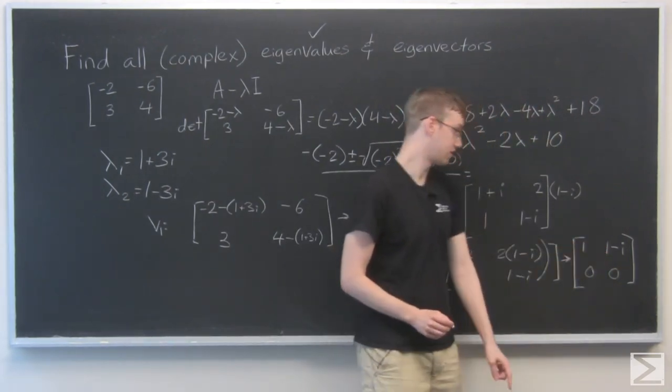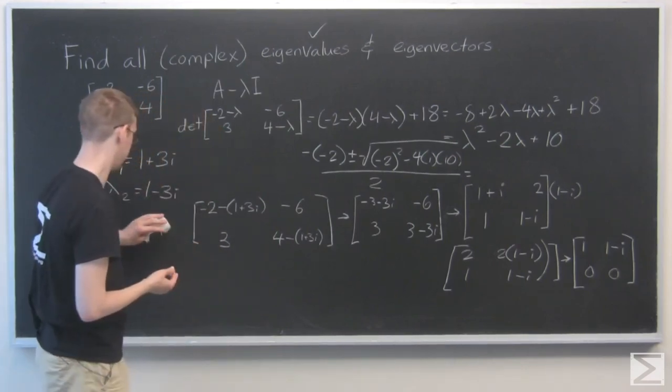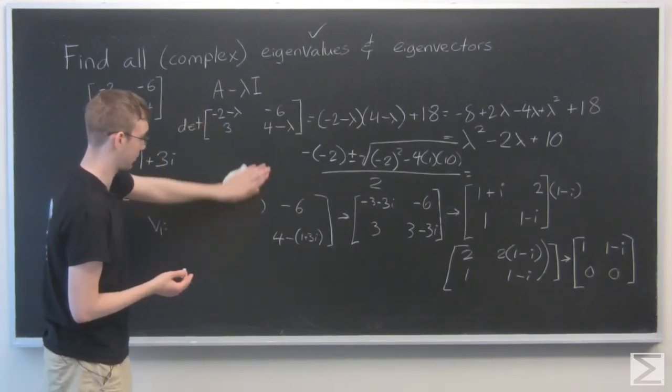OK. 1, 1 minus i, and zeros. All right. I'm running out of room to work. I'm going to get rid of this just so I can do my final step.